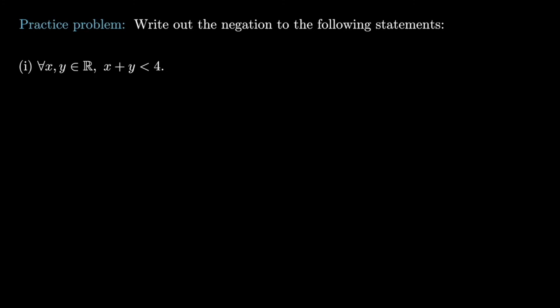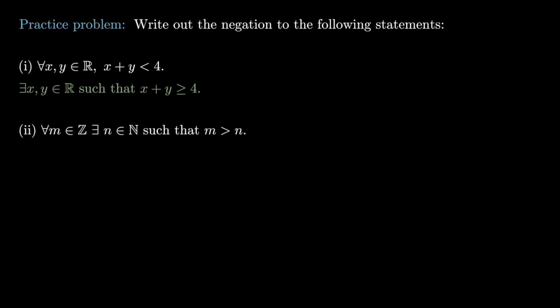For the second statement — 'for all m in ℤ, there exists n in ℕ such that m > n' — there are two quantifiers: a universal and an existential. The statement says for all integers m we can find an n such that m > n. To negate this: there is some integer m such that regardless of which n you pick, for all n in ℕ, m ≤ n. In logical notation: there exists m in ℤ such that for all n in ℕ, m ≤ n.